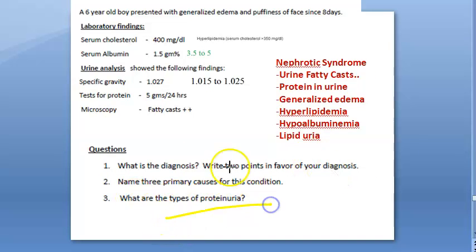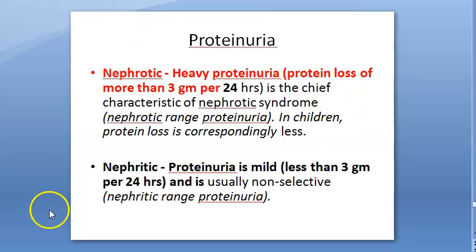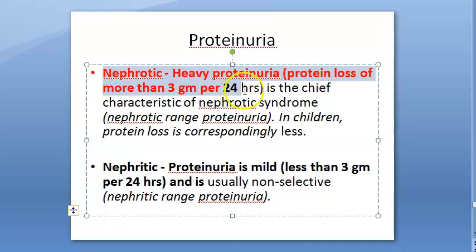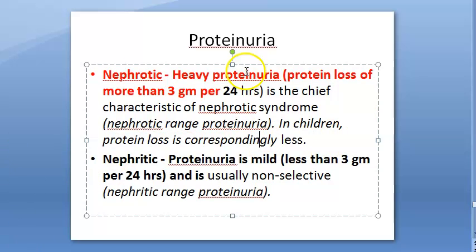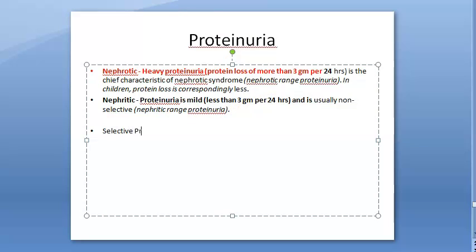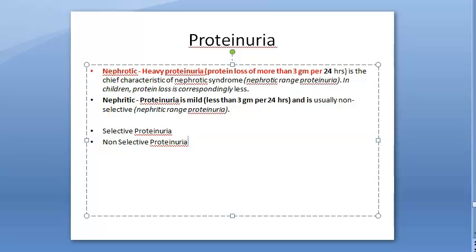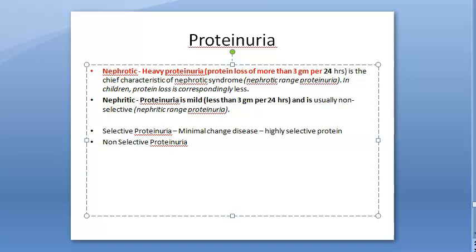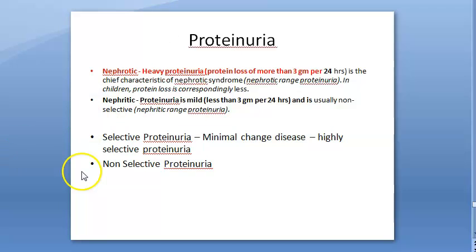What are the types of proteinuria? Heavy proteinuria is more than 3 grams per 24 hours (nephrotic range); nephritic will be a little less. You can also classify as selective proteinuria — for example, only albumin loss — versus non-selective proteinuria where all proteins are lost. In minimal change disease it will be highly selective proteinuria.